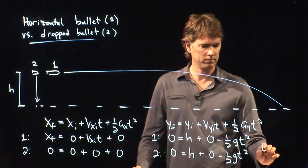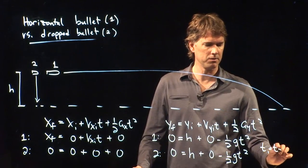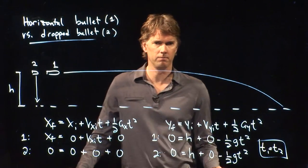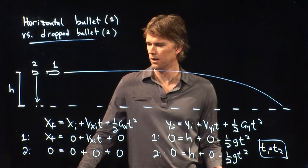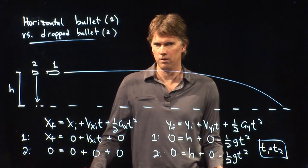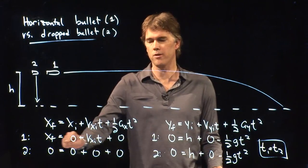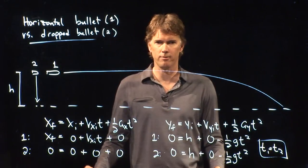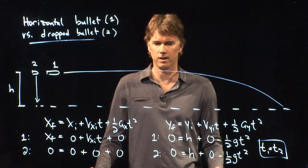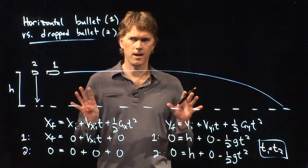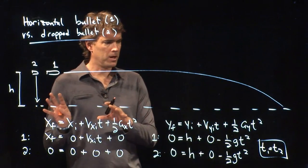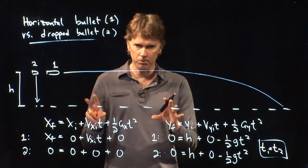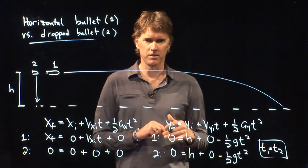And so you can say t1 has to equal t2 — those equations are exactly the same. And in fact, you can solve one of them to get t; it's not that complicated. The difference is in the x equations: one of them travels very far in that amount of time in the x direction, the other one doesn't travel anywhere in the x direction. So it's a little counterintuitive when you first think about it, but if you remember that these equations are decoupled — the x motion is decoupled from the y motion — then it makes sense.